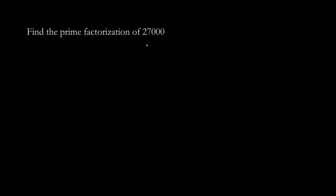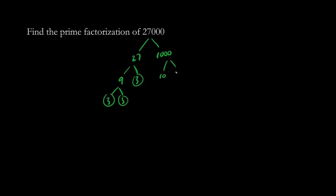Let's find the prime factorization of 27,000. 27 times 1,000 is the same thing, and we have nine times three is 27, and the nine breaks down to three times three. 1,000 is the same thing as ten times ten times ten, and we can break down this to two times five. Notice how we're circling the prime numbers.